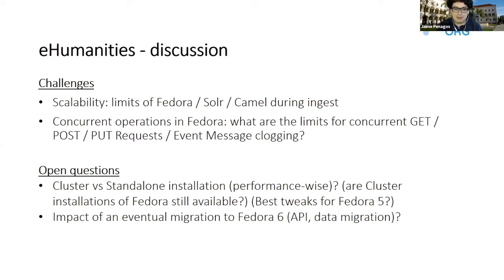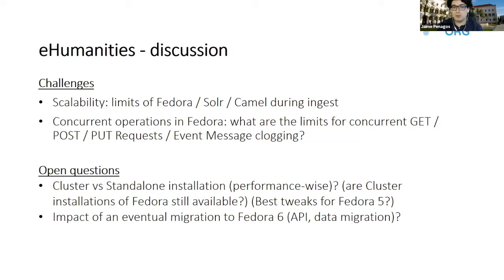That has also some open questions in our case. We are thinking about how we can improve this setup and this infrastructure. For instance, is the cluster installation still available in Fedora 5? As far as I know, I'm not sure if that's also an option right now or if it's going to be an option for Fedora 6. Also, what can we do when we have the data and we want to migrate to Fedora 6? That's one of the biggest questions right now, because we're looking forward to using Fedora 6 and all the functionalities it offers.